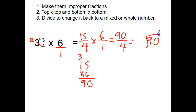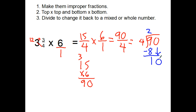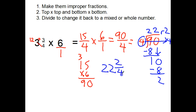Ninety divided by four. Four goes into nine two times, bring down my zero, how many fours in ten? Two times. Twenty-two remainder two — I'm bringing this four over as the denominator, so it's twenty-two and two-fourths.